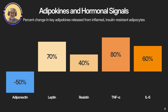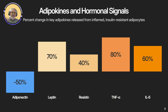Adipokines and hormone signals: dysfunctional fat cells also shift their adipokine profile. They lower adiponectin — the anti-inflammatory, insulin-sensitizing hormone — which is not good; you want this to be higher. They increase leptin, but with leptin resistance, so you're not responding to the leptin being released and you stay constantly hungry. Resistin promotes insulin resistance, and that goes up. Pro-inflammatory cytokines increase. These molecules act systemically, perpetuating inflammation, disrupting hunger signaling, and worsening insulin resistance.